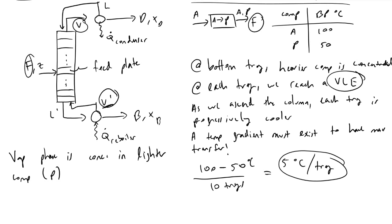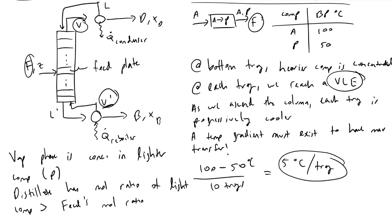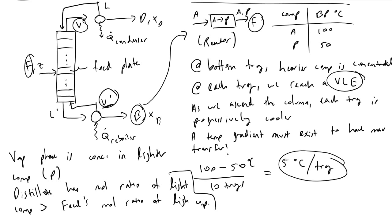The take-home message is that the distillate has a mole ratio of the lighter component that is greater than the feed mole ratio of the light component. We end up with a distillate stream containing a purified product we can sell to market, and a bottom stream that we can send back into the reactor to achieve better conversion of our reactants.